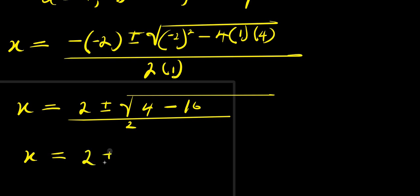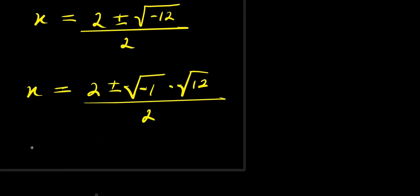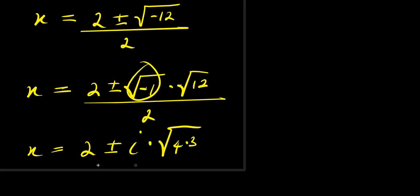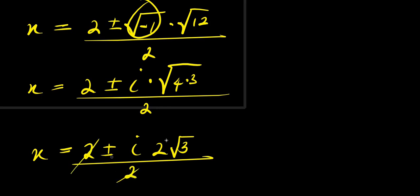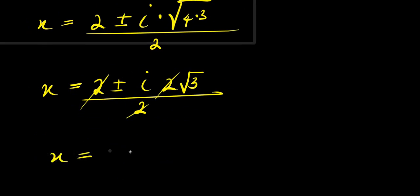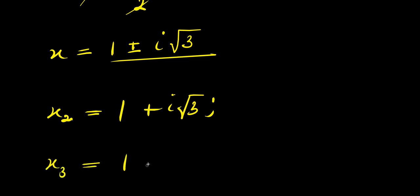From here x equals 2 plus or minus square root of 4 minus 16, divided by 2, which gives x equals 2 plus or minus square root of negative 12, divided by 2. We split this as square root of negative 1 times square root of 12, giving i times 2 root 3. Dividing through by 2 gives x equals 1 plus or minus i root 3. So we have two complex solutions: x2 equals 1 plus i root 3, and x3 equals 1 minus i root 3.